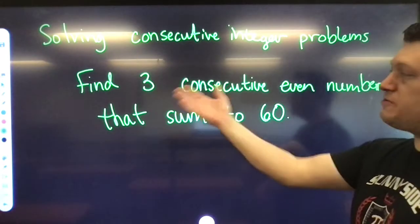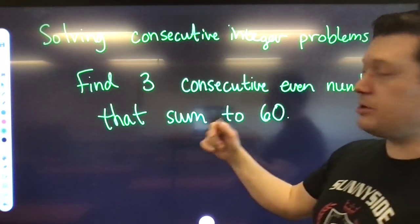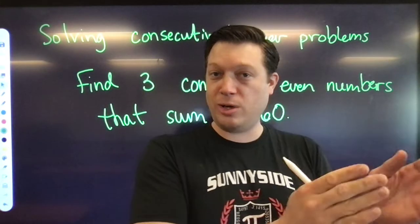The question that I'm presenting to you is find three consecutive even numbers. So there's our integers or even numbers and they sum to 60. That would mean something like 2, 4, 6. They're consecutive, there's three of them.